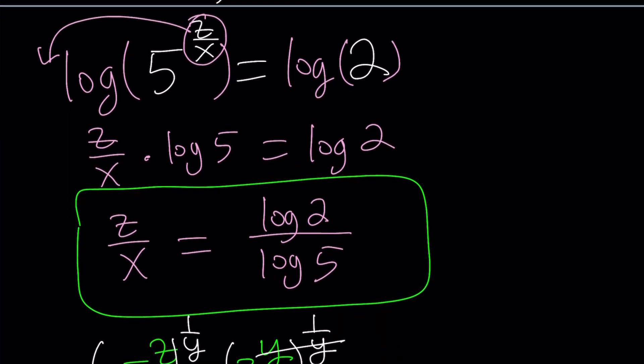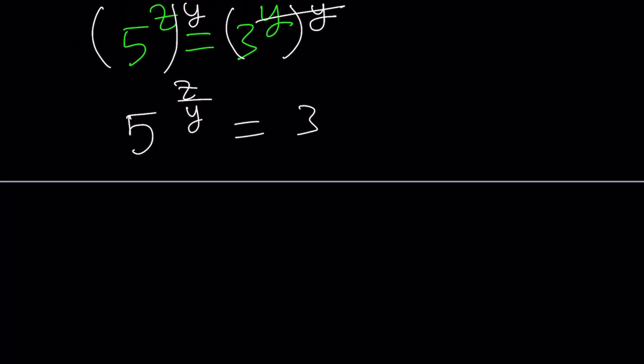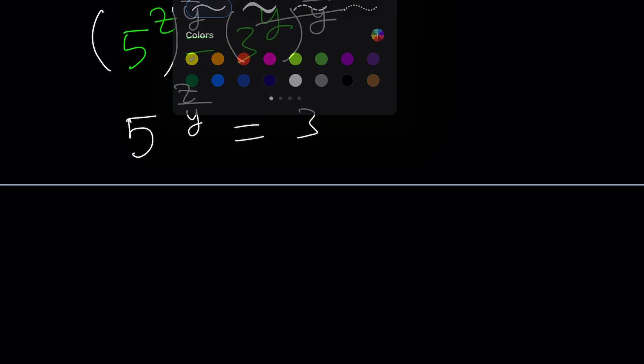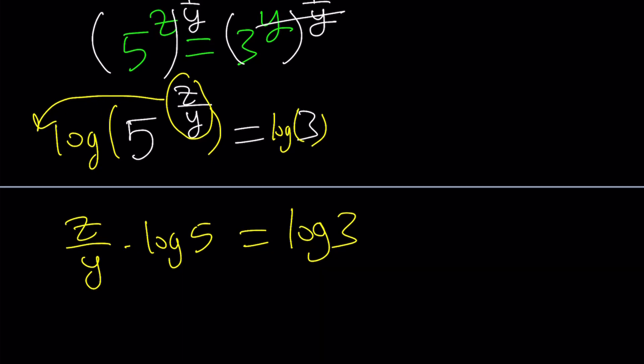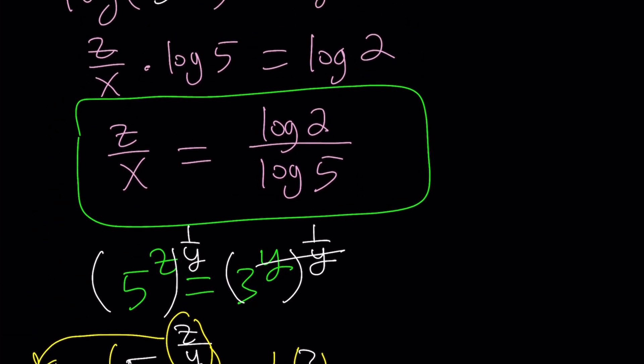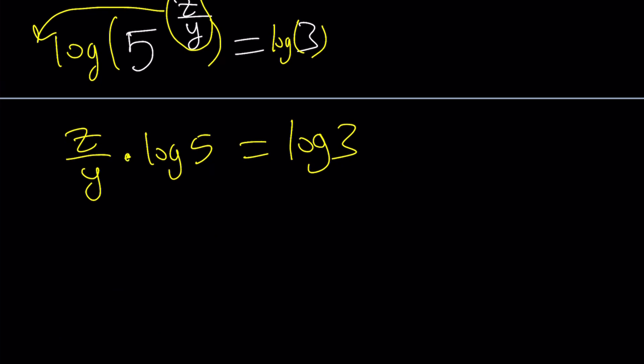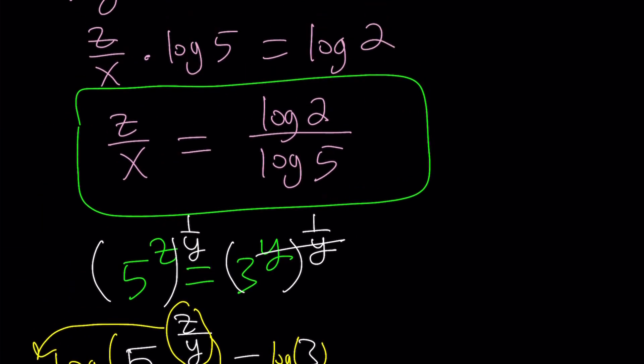Because y cancels out and we end up with 5^(z/y) = 3. Now what do we do next? We're going to log both sides again. z/y multiplied by log 5 = log 3. And from here we can solve for z/y. Divide both sides by log 5. Log 3/log 5 is going to be the answer.